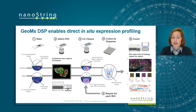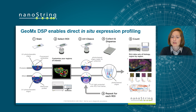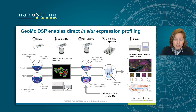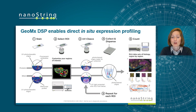Once your ROIs have been selected, the DSP shines a UV light on your ROI, photocleaving the readout probes from the mRNA targeting probe. The readout probes are collected and dispensed into a well of your 96-well plate, and the process is repeated for each ROI. The readout probes are then read by Illumina sequencing technology and counted, providing rich data sets of biology, region by region.